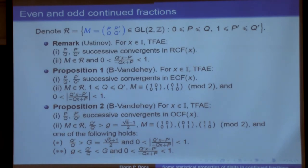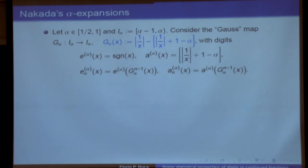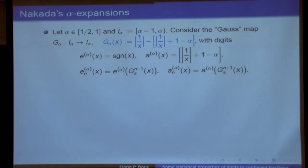In the case of odd continued fractions, it is possible that q'/q is less than 1, meaning the denominators can go down a little bit from time to time. They increase to infinity, but slower than in the regular case — the sequence is not monotonically increasing. This makes the analysis more intricate for odd continued fractions. In the case of odd continued fractions, there is a finite probability invariant measure. Regarding approximation quality: yes, exactly, these are not the best approximations. The best one is perhaps NICF — nearest integer continued fraction — in some sense.